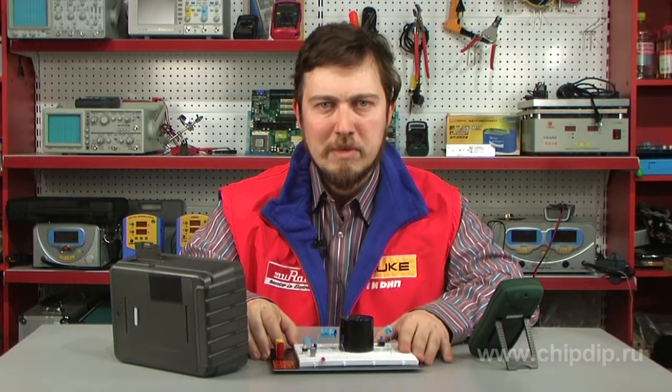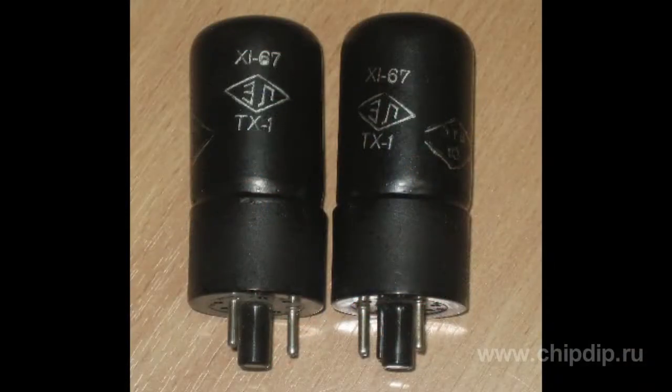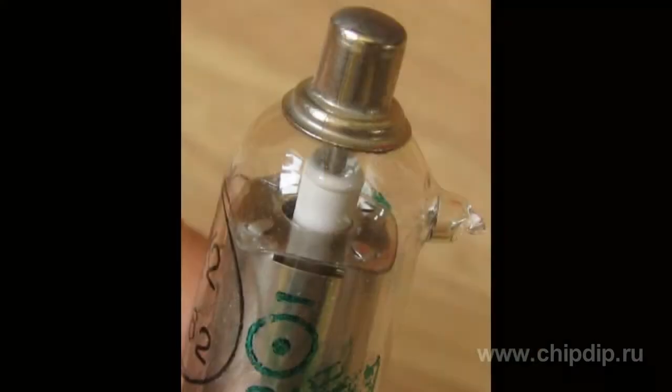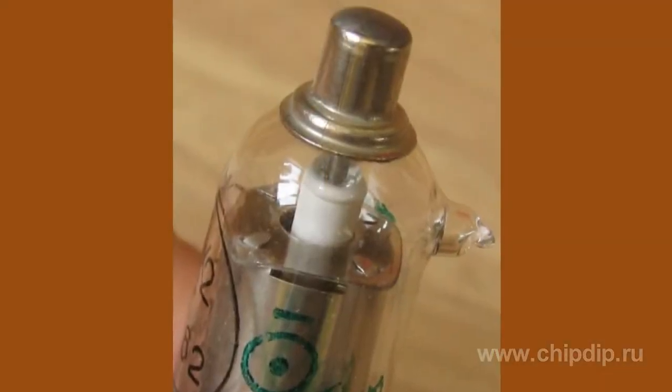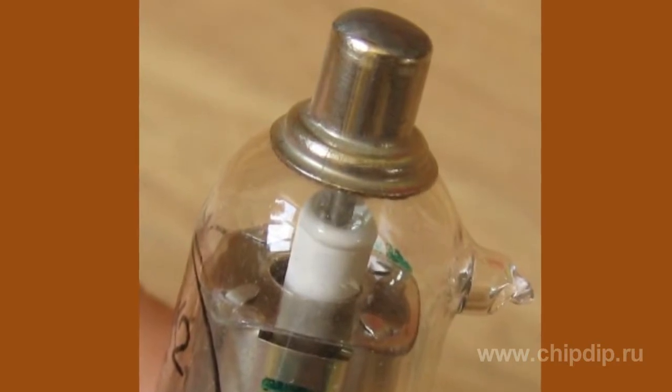Where do they use these devices? Cold cathode thyratrons, glow-discharge thyratrons, are low-power control devices and are designed to be used in ladders, electronic pulse equipment, computers, relaxation oscillators, and other low-power devices.